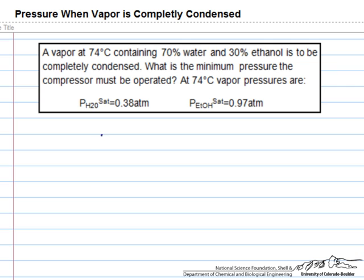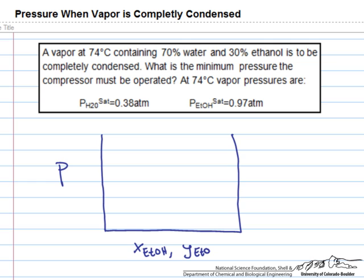So let's draw a p-x-y diagram of what's going on. On the y-axis we'll plot the pressure and on the x-axis we'll plot the mole fraction of ethanol in the liquid and the mole fraction of ethanol in the vapor.